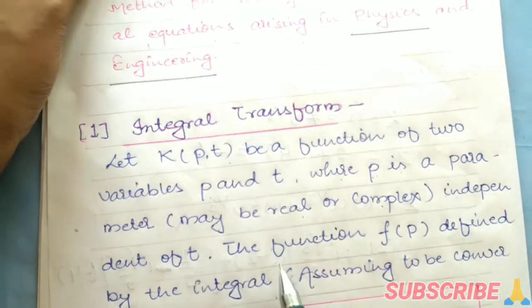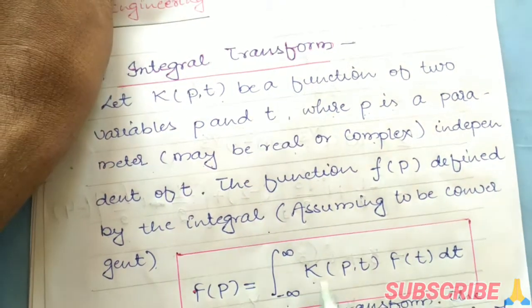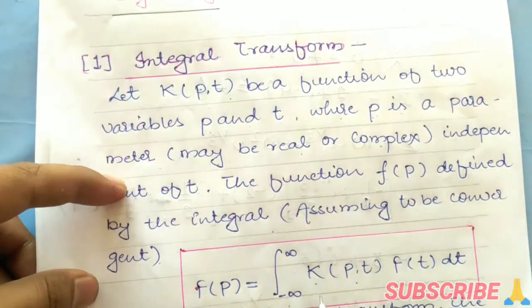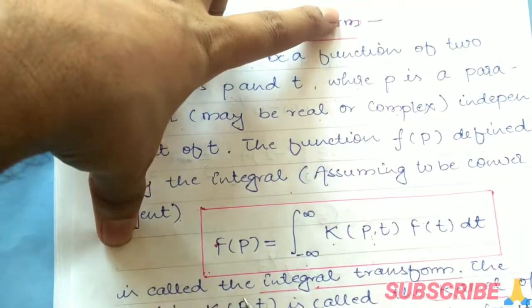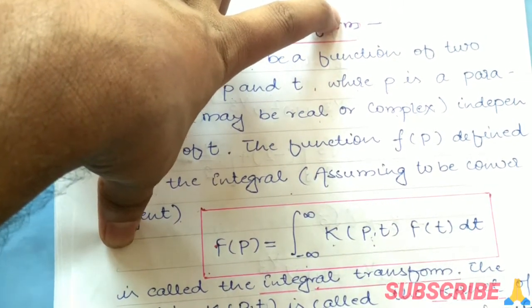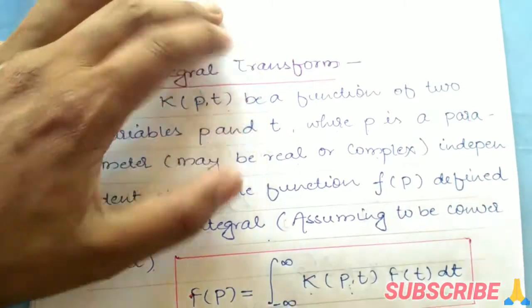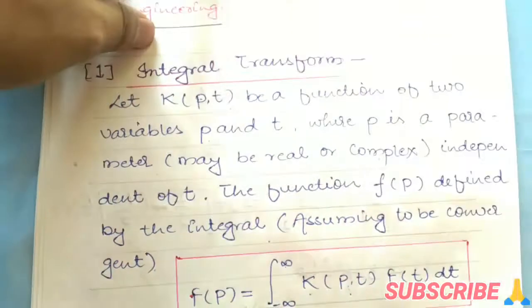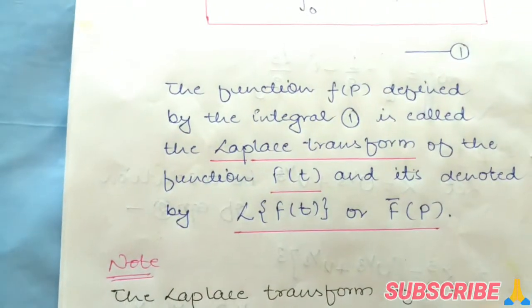The function F(p) defined by the integral from minus infinity to infinity of K(p,t)f(t)dt, assuming to be convergent, is called integral transform. K(p,t) is called the kernel.